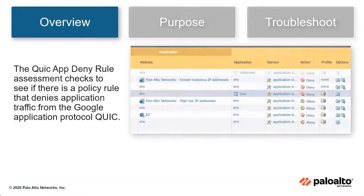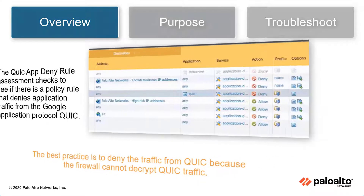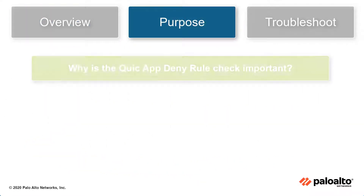The QUIC app Deny Rule Assessment checks to see if there is a policy rule that denies application traffic from the Google application protocol QUIC. It is best practice to deny traffic from QUIC since the firewall cannot decrypt QUIC traffic.